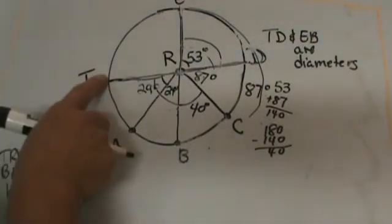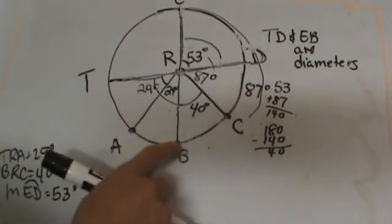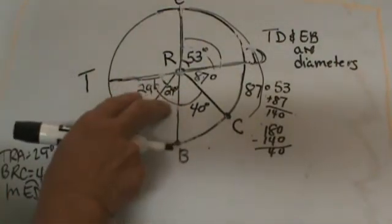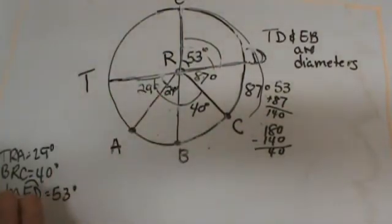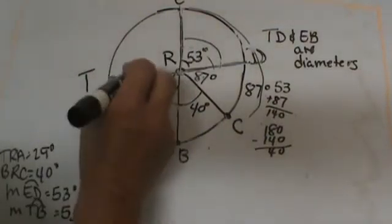How about TB? TB, again this is an arc. We know that TB is the same as this central angle, and we figured out this central angle is the sum of these two. So the measure of TB has to be 53 degrees also.